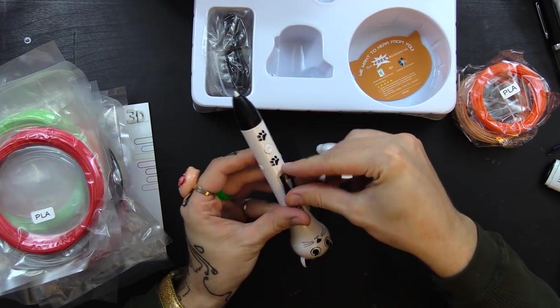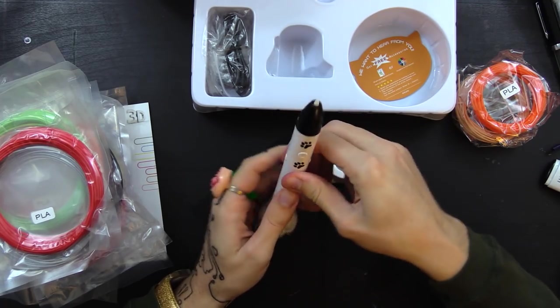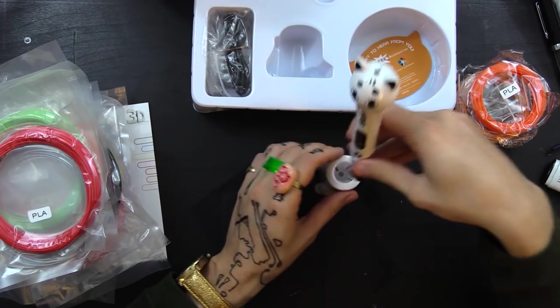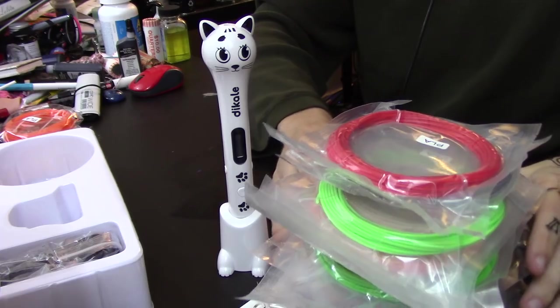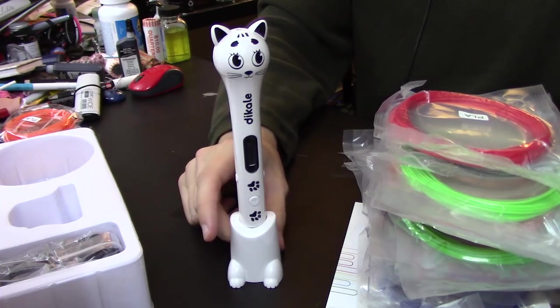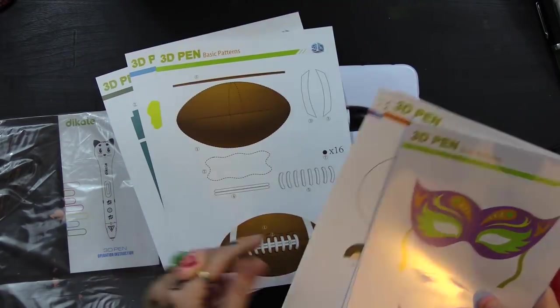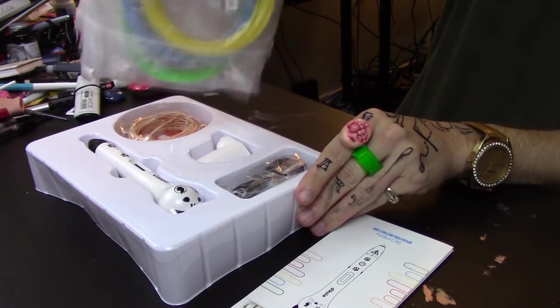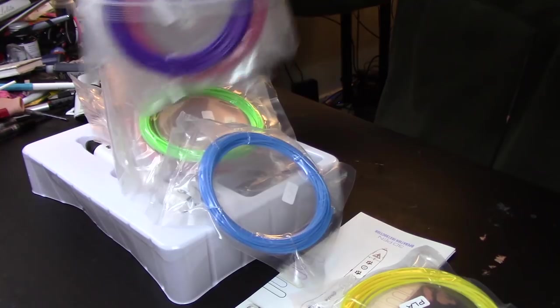I've done a 3D pen printing video before, and this pen works pretty much the same. You can put PLA or ABS fiber in it, and I think the main difference between those two is it needs slightly different temperatures for it to work.